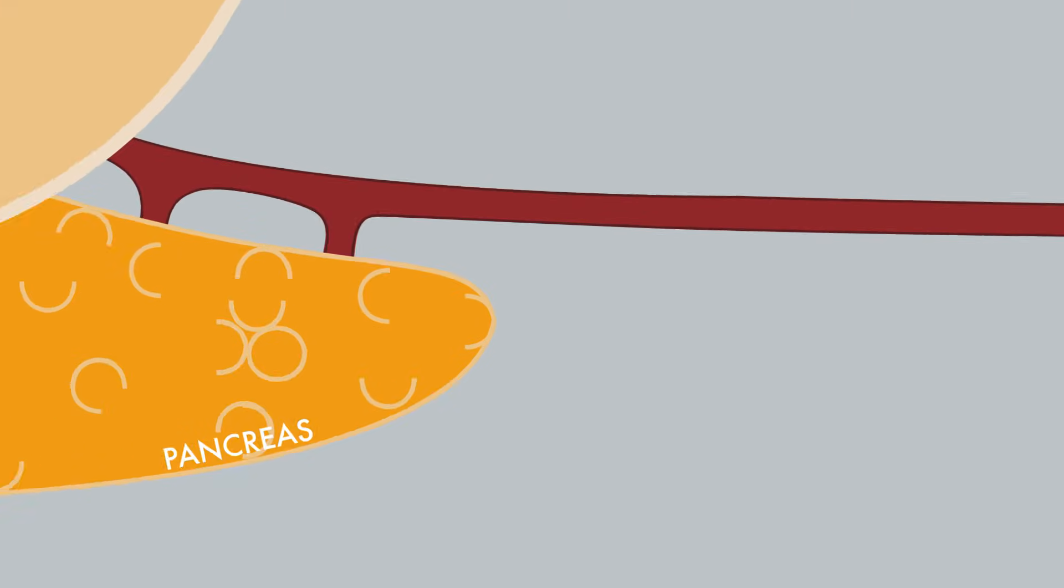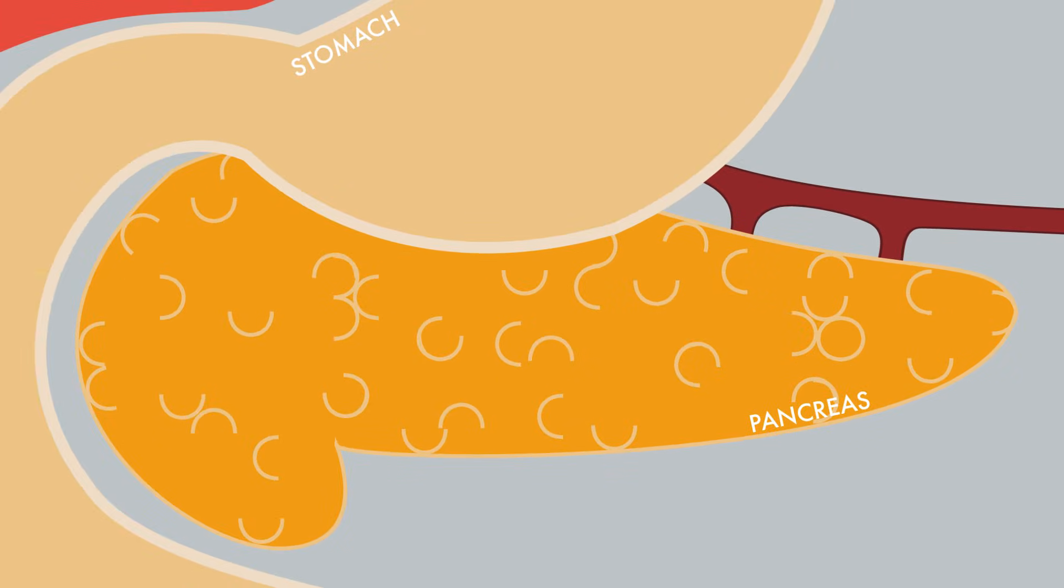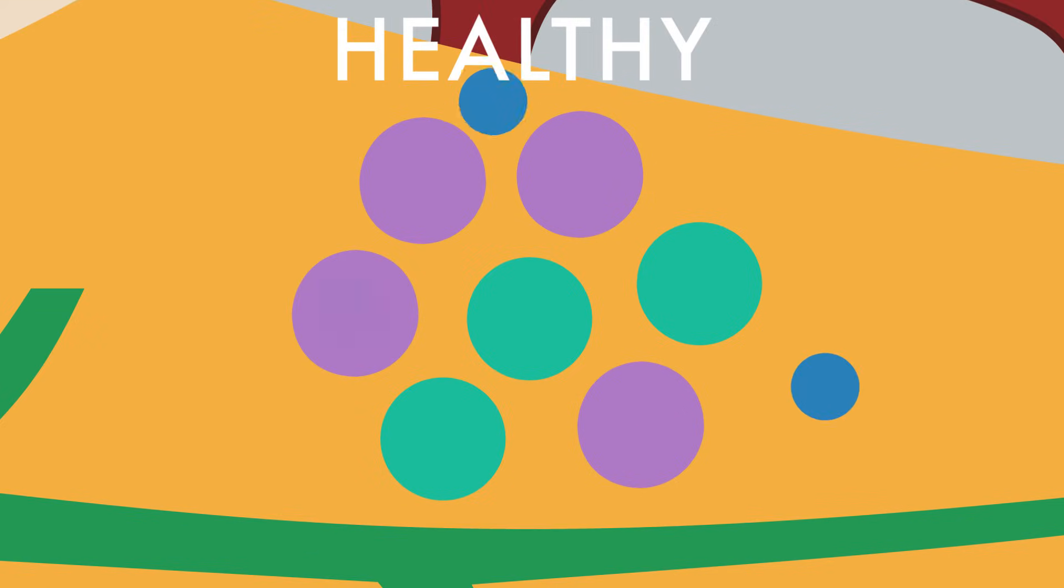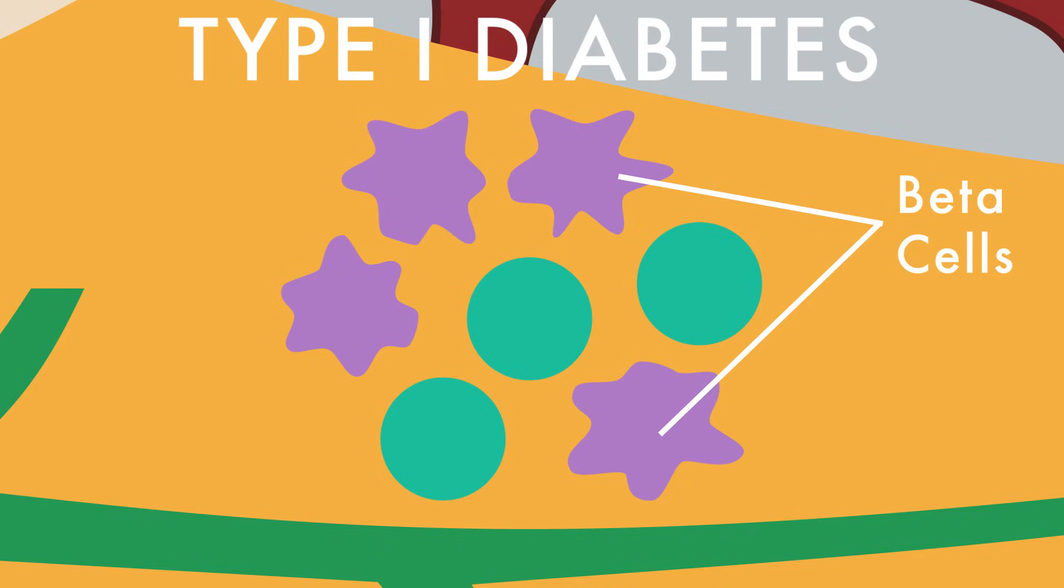Failure to regulate blood glucose can result in diabetes. Type 1, or insulin-dependent diabetes, can result from failure of the pancreas to produce insulin. In this complex metabolic autoimmune disease, the immune system attacks the beta cells of the pancreas, which normally produce insulin. As a result, insulin synthesis is prevented.